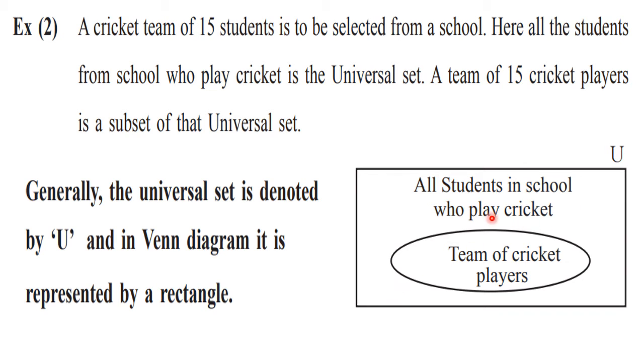The universal set is denoted by U, and in Venn diagram it is represented by a rectangle. All the students in the school who play cricket is the universal set, and the team of cricket players is going to be a subset of that. Now the important concept of complement we will discuss — complement of a set is related to the universal set.